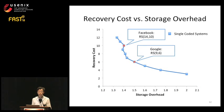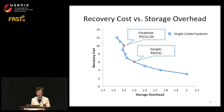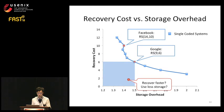Looking at existing production systems, most of them use a single erasure code. For example, Facebook and Google both use Reed-Solomon codes. On this graph, the X axis is the storage overhead and the Y axis is the recovery cost—the number of blocks that need to be transferred over the network to recover one block. The two erasure codes used in existing systems show an inherent trade-off between these two dimensions. In this work, we want to develop a technique that achieves lower recovery cost while using less storage space.